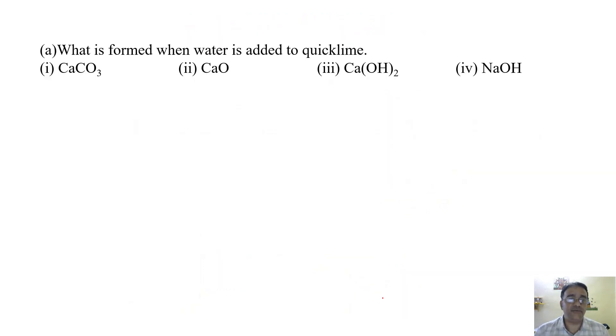The first question: what is formed when water is added to quicklime? When water is added to quicklime, then calcium hydroxide will form. Calcium hydroxide, so this one, the third bit.